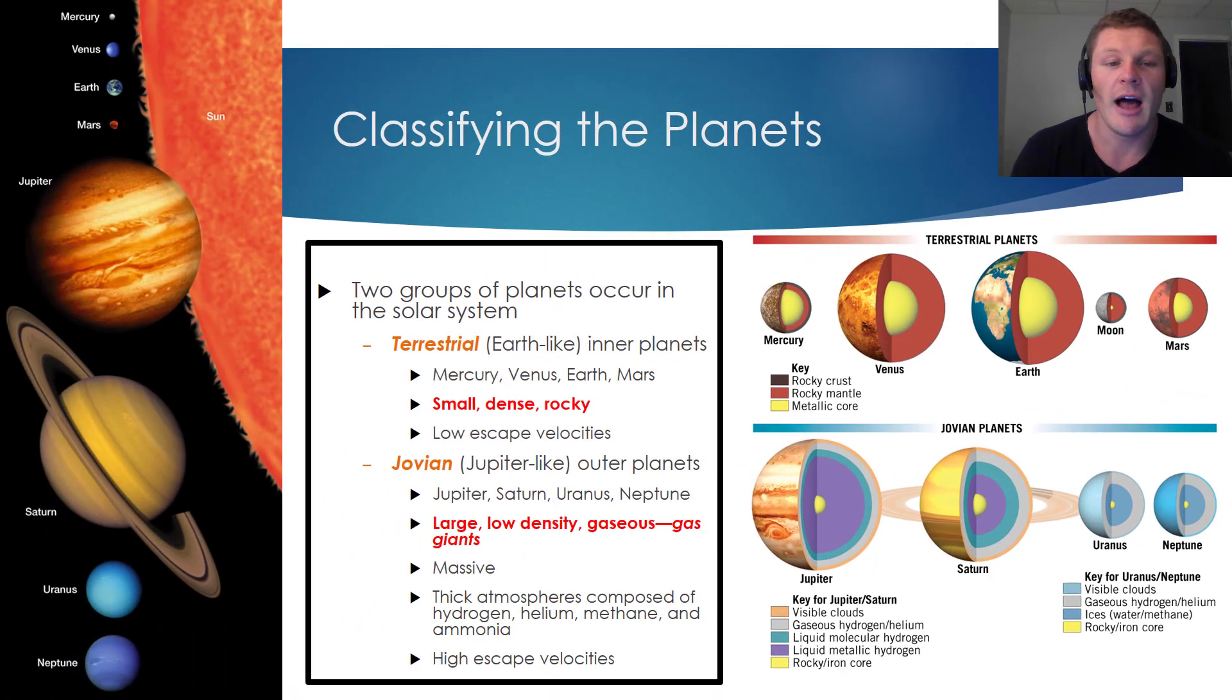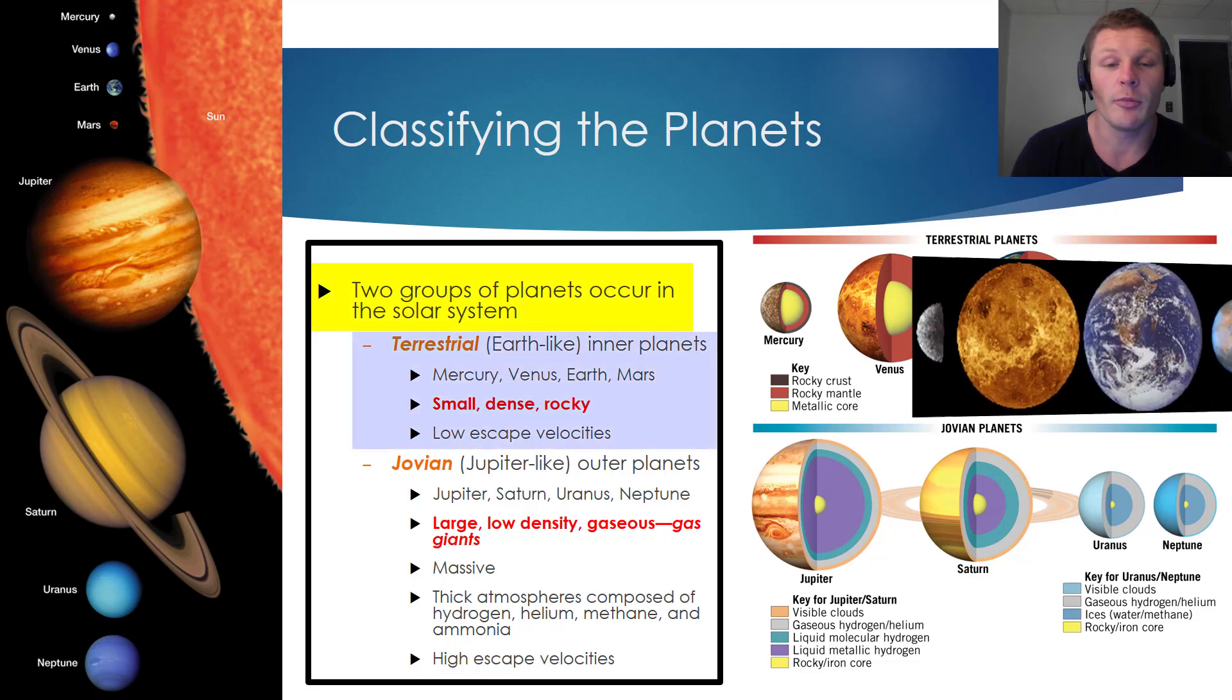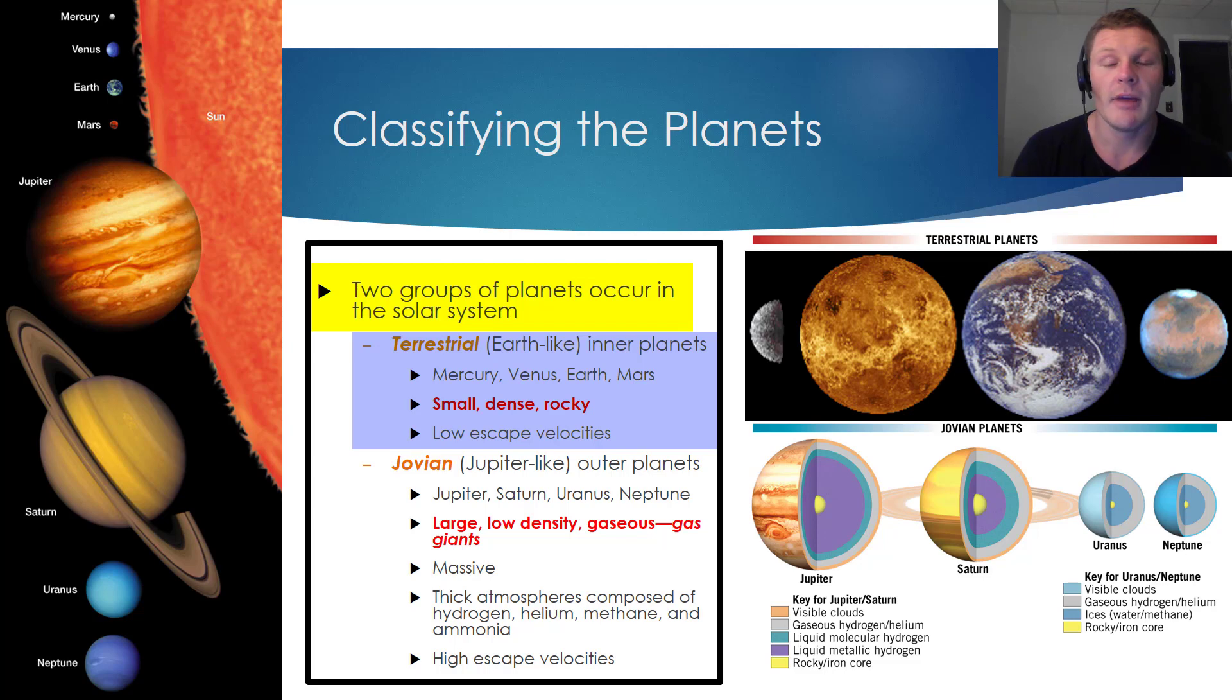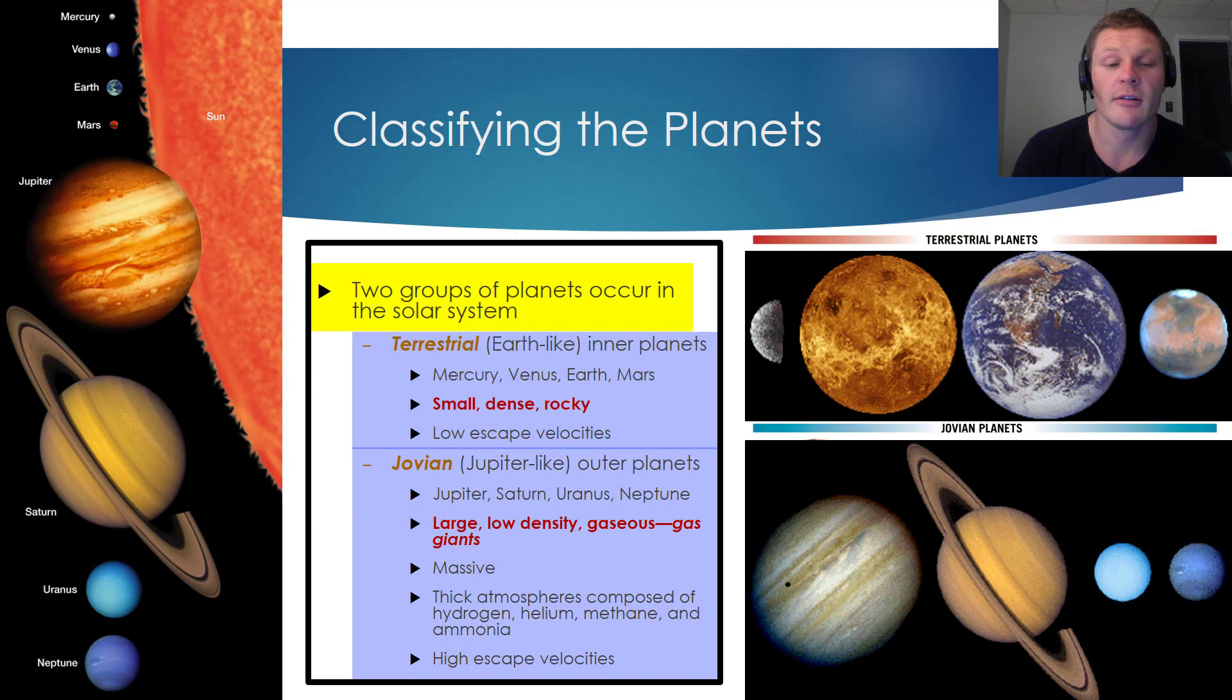But the take home point on this slide is that there are two groups of planets that occur in our solar system. There are the terrestrial planets, which are small, dense, and rocky. And the four planets that fit that classification are Mercury, Venus, Earth, and Mars. And the second group of planets is the Jovian, or the Jupiter-like planets. These planets are large, they're low density, and they're gaseous. And they include Jupiter, Saturn, Uranus, and Neptune.